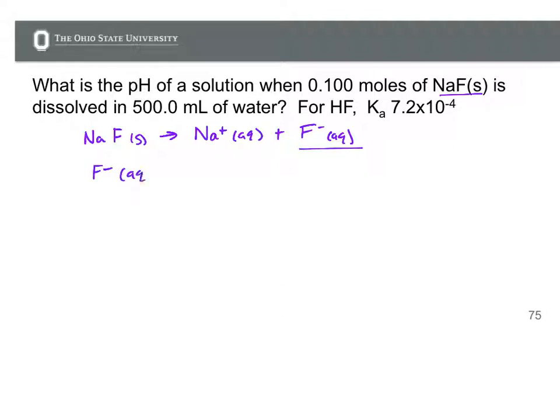When we put this in water we'll have its equilibrium with HF and OH minus. Just given this equilibrium we would expect the pH to be basic because we have OH minus on the product side. So to find the pH of the solution we need to use an ICE table. Now to actually calculate that we need to use our ICE table.